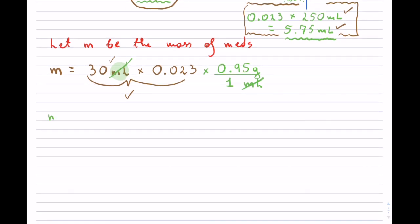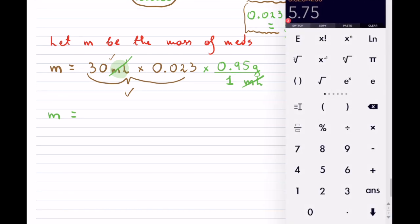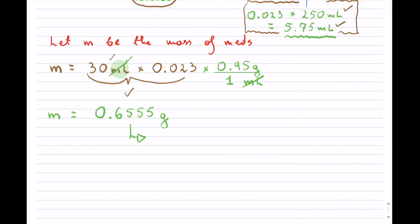So my mass in total is equal to 30 times 0.023, the concentration, and then we multiply by 0.95. And then we can divide by 1, which is still going to give us that answer. So this becomes 0.6555 grams. But we're supposed to round this answer to the thousandth. So tenth, hundredth, thousandth. So this is 0.656 grams of the meds that they were supposed to receive.